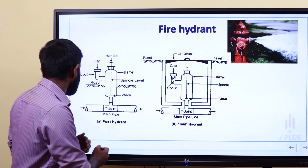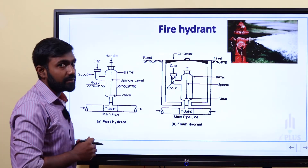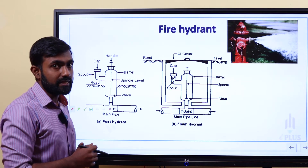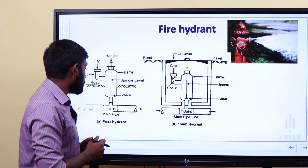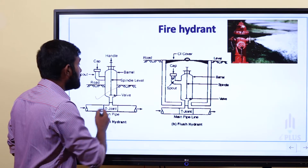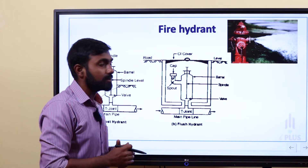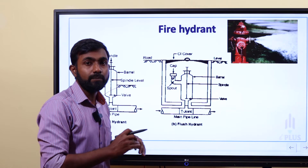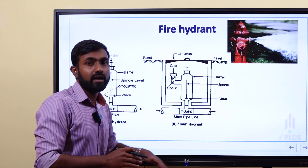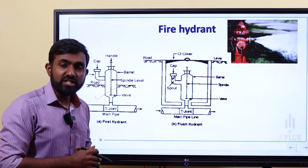Post hydrant is at a very high height — maybe 60 to 90 cm above ground. That is why we call it Post Hydrant. Flush hydrant is at ground level, and that is why we call it Flush Hydrant.